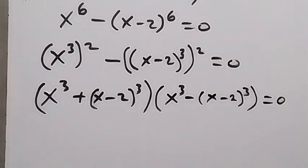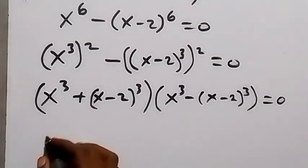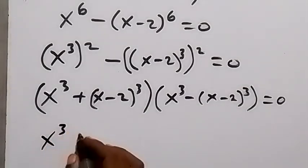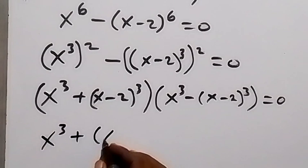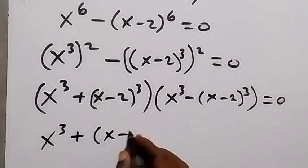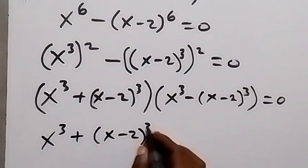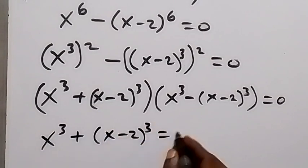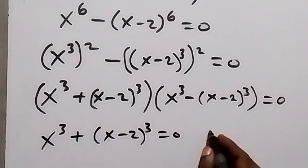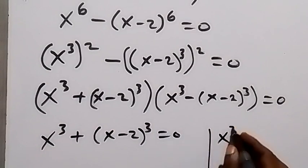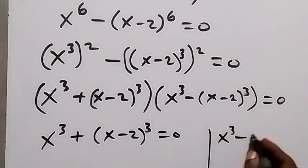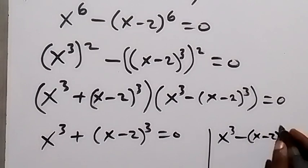From here we have two cases. The first case: x raised to power 3 plus x minus 2 raised to power 3 equals to 0. The second case: x raised to power 3 minus x minus 2 raised to power 3 equals to 0.